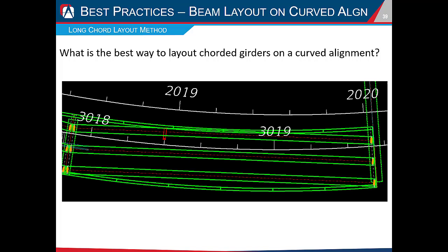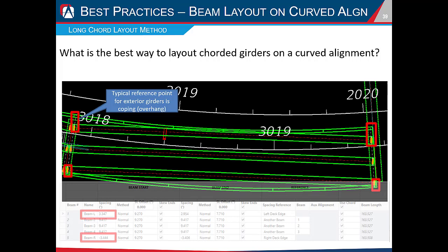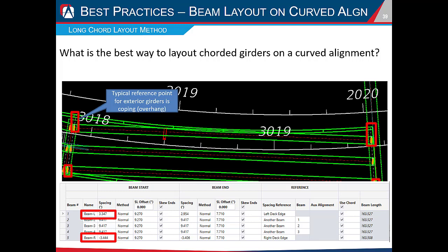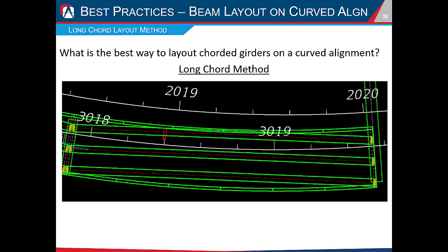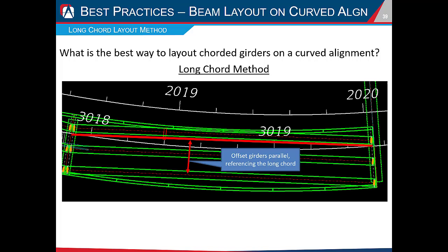The last tip is laying out chorded girders on a curved alignment. The default reference point for exterior girders in OBM is the overhang distance at the beginning and end of the beam, which can produce odd-looking overhang numbers on a curved alignment. The best approach is the long chord method: OBM draws a line between the points of intersection of the alignment and the support lines, and the offset distances for your girders reference that long chord line, ensuring all girders come out perfectly parallel with much cleaner numbers.